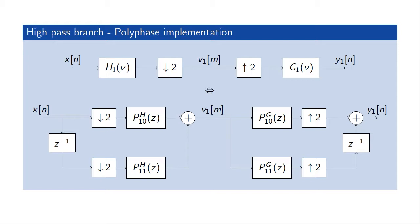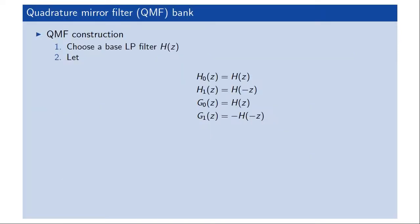It turns out we can reduce the number of multiplications per unit time even further for certain filter bank structures by using the polyphase filters in a clever way. One such construction is known as the quadrature mirror filter bank, or QMF. In the QMF construction, one chooses a specific low-pass base filter H, and then forms all the other filters based on that base filter. So H and G for the low-pass branch, and H and G for the high-pass branch, are all based on the transfer function of that given base filter.